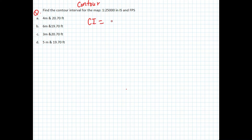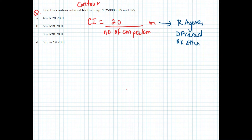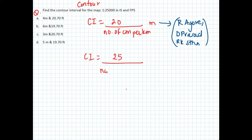The contour interval formula is: CI equals 20 divided by number of centimeters per kilometer. This formula is found in books like R. Agur or D. Prasad or R.K. Stressor. However, in other books you will find a different formula: CI equals 25 divided by number of centimeters per kilometer.